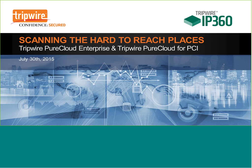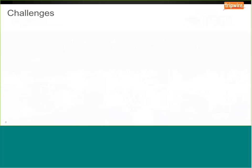At the end of this webinar you're going to leave with an understanding of how to use Tripwire IP 360 and Pure Cloud Enterprise for several different use cases, including detecting vulnerabilities in systems that are visible to outside attackers, scanning remote locations that can't easily be accessed over a VPN connection, assessing the security of your business partners and supply chain, and how Pure Cloud Enterprise and the PCI ASV service can be used to assist with PCI DSS compliance efforts.